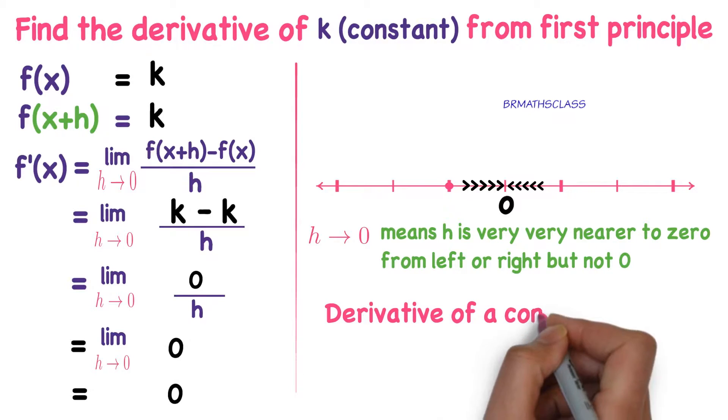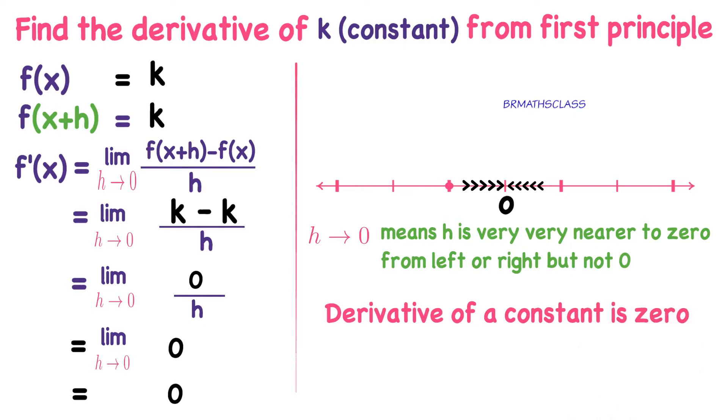So what is the conclusion we got? Derivative of a constant is 0. From now onwards, we take this as a formula. Derivative of constant is 0.